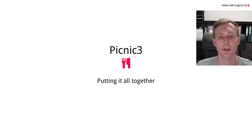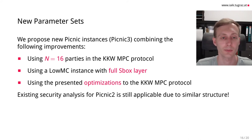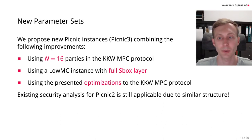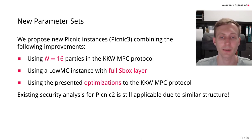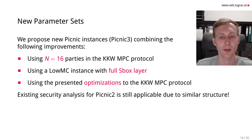Finally, let's talk about Picnic3. Picnic3 is a new set of Picnic instances combining the previous improvements. We take a trade-off of using N=16 parties in the KKW MPC protocol, use a LowMC instance with a full S-box layer which also provides better performance, and apply all of the presented optimizations to the MPC protocol. The existing security analysis for Picnic2 is still applicable, since the new structure of Picnic3 is very similar.